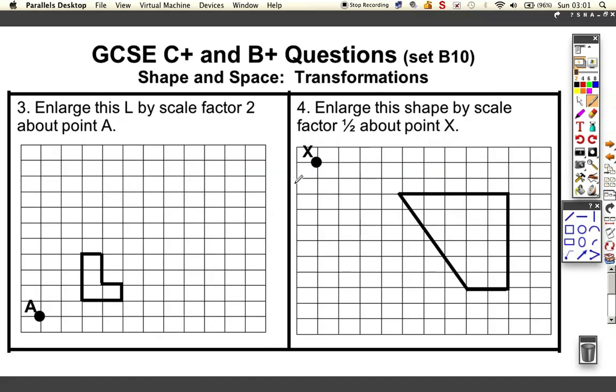Let's go on to here. Enlarge this L by scale factor two about the point. Well often people lose marks on this type of question because they can enlarge a shape scale factor two which is fine, it's just double size. Except they get it in the wrong place. If there was no center of enlargement it was fine. You could fit the double size shape anywhere on this grid and it would be easy. But because we've got center of enlargement we've got to work out exactly what's going on.